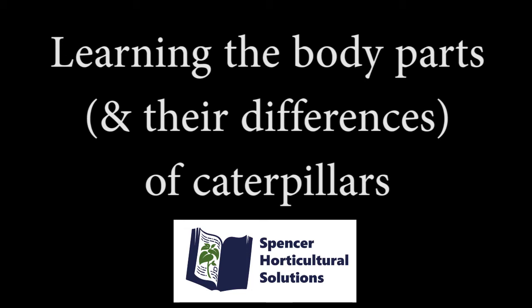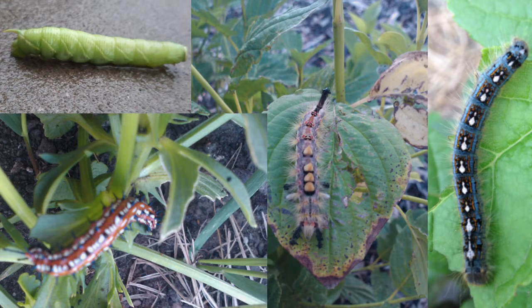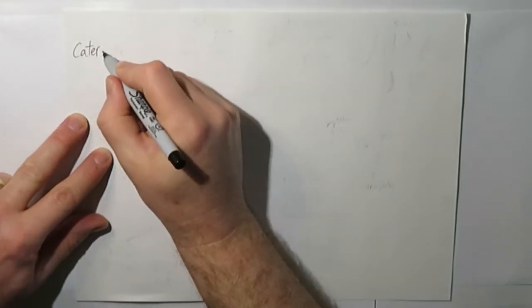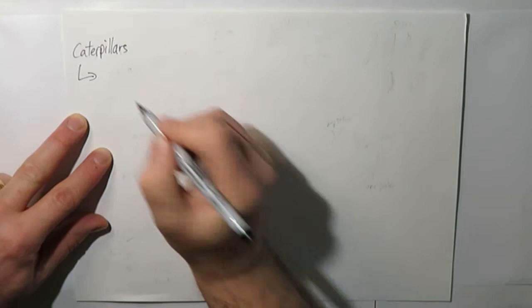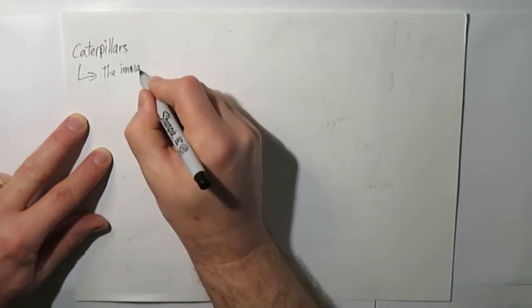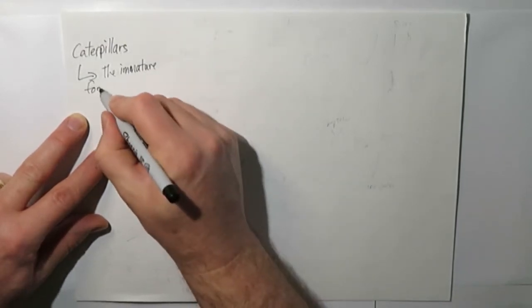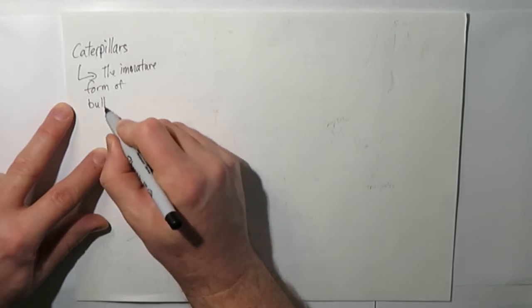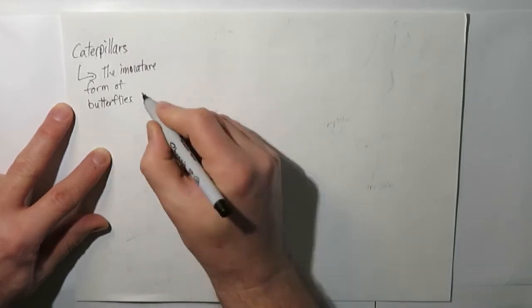This video will look at the different body parts of caterpillars, as well as the differences in appearance of those parts. The purpose is to understand how to better differentiate and identify caterpillars. Caterpillars are the larval or immature form of butterflies and moths. These are also referred to as Lepidoptera or Lepidopteran pests.